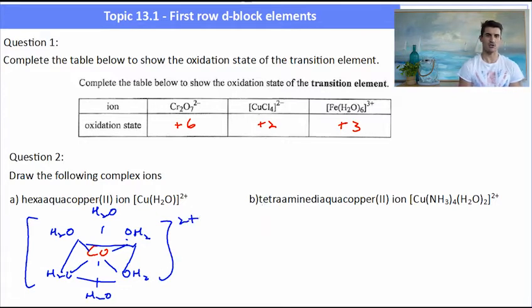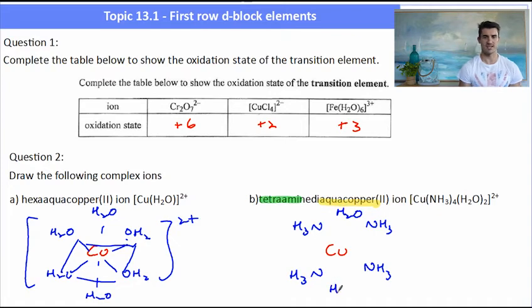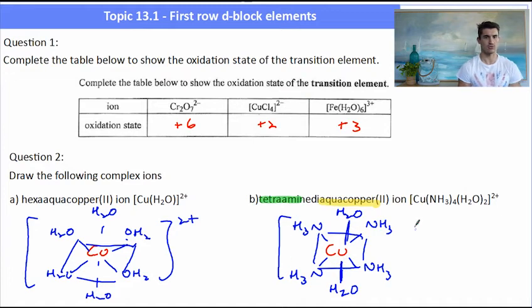The next one, tetraaminediaquacopper(II) ion. Again, the copper(II) ion has a two plus charge. Tetra meaning four, di meaning two. So I have four amine groups and two water groups. I don't really know where these ones will go. So it's not going to be important about which one goes where, just as long as we have the right numbers in the right spots. Six ligands, again, is going to take the octahedral setup. So here I've drawn my four ammonias in my square planar and my two waters above and below, giving me my octahedral setup. Again, I need to include the charge. The charge will be two plus.